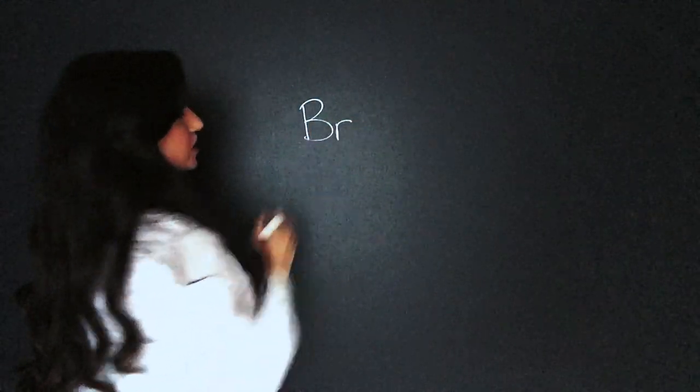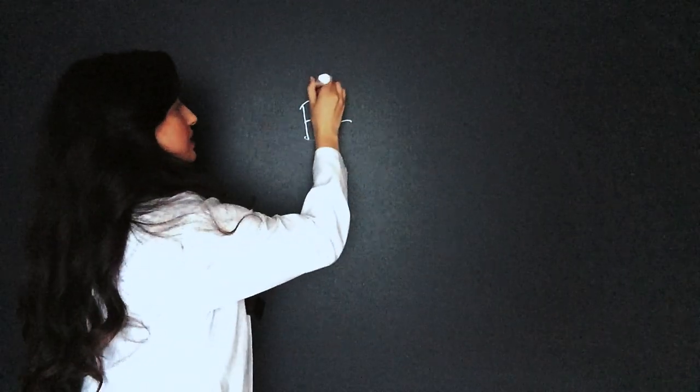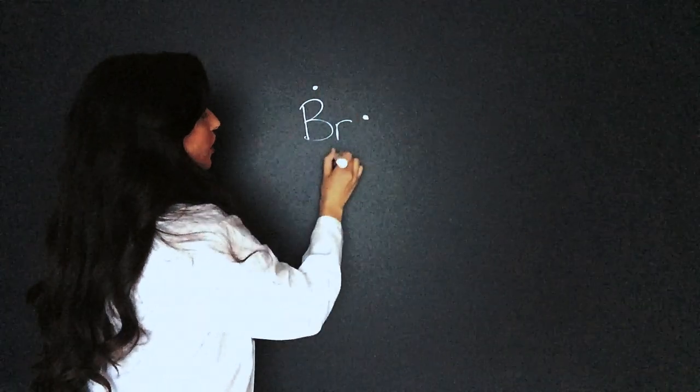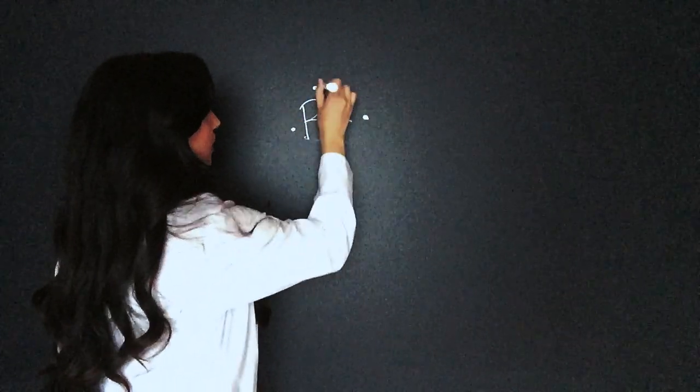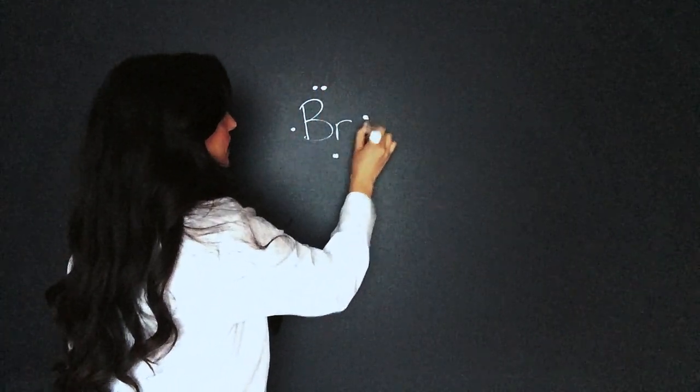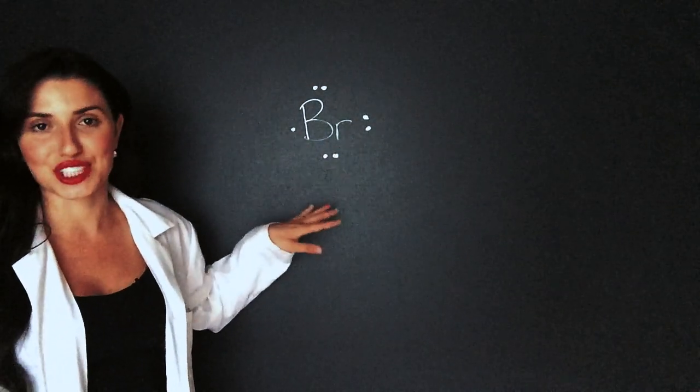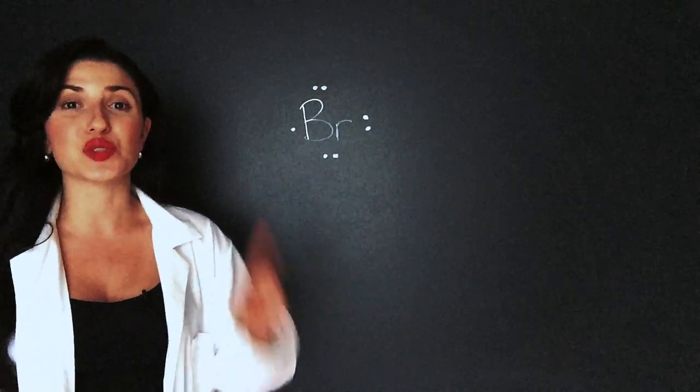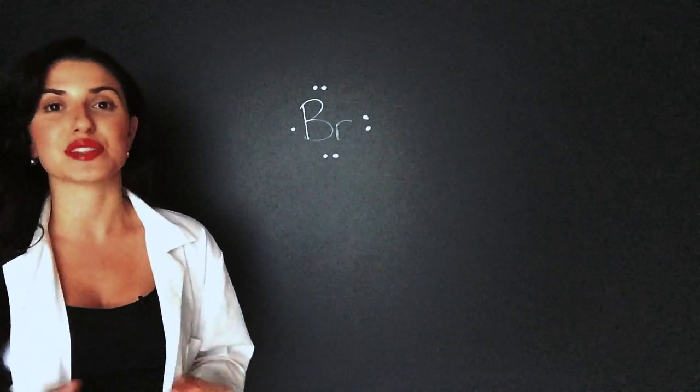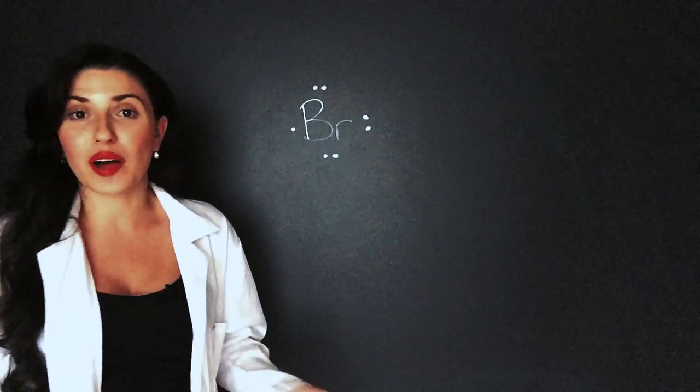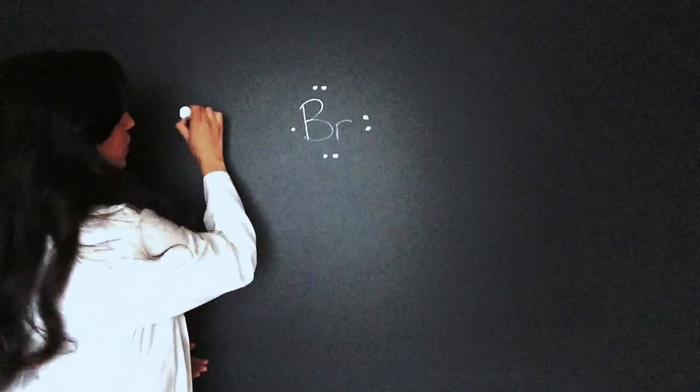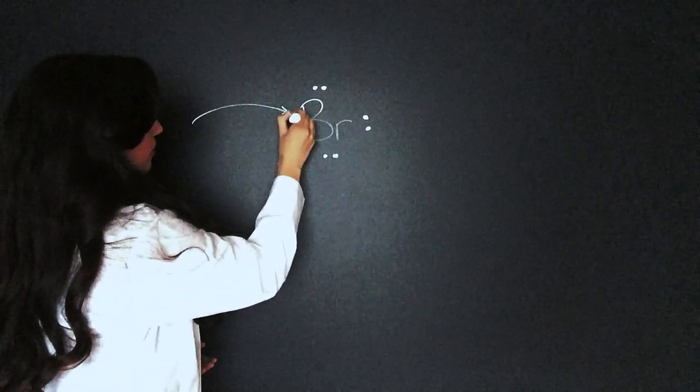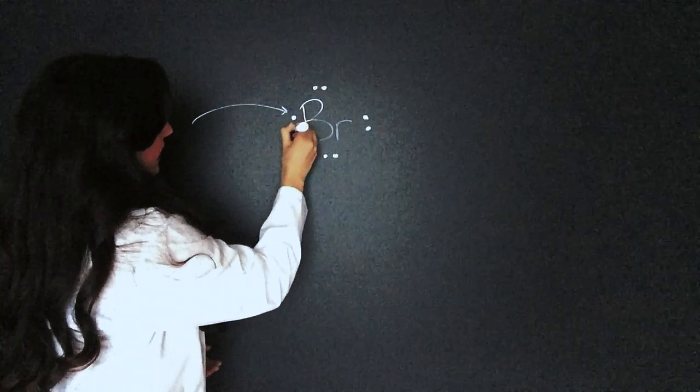The Lewis structure for bromine looks like this. One, two, three, four, five, six, seven. Bromine is a halogen, so that means it has seven electrons in its outer shell. It only needs one more electron to achieve its full octet. So what will happen is bromine will borrow an electron from another atom and gain its full octet.